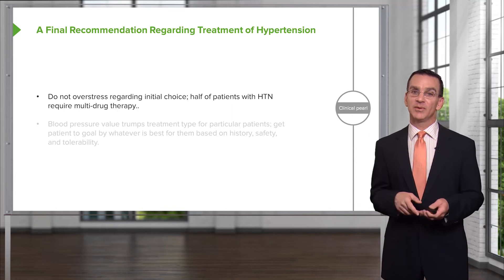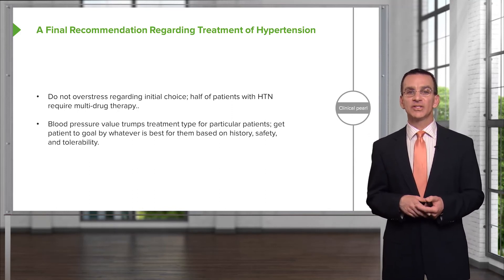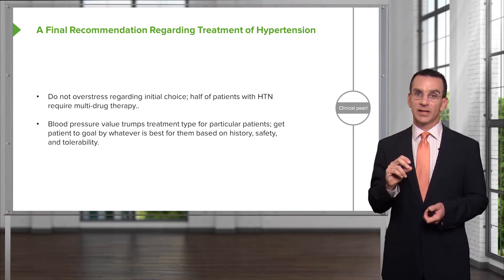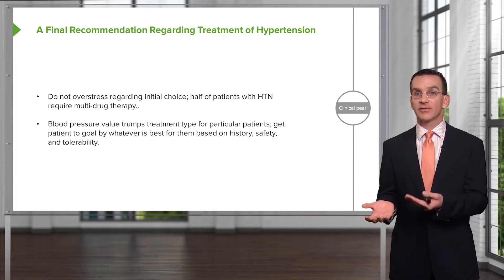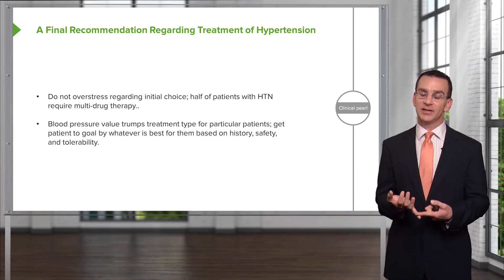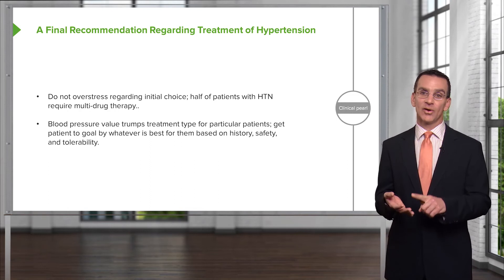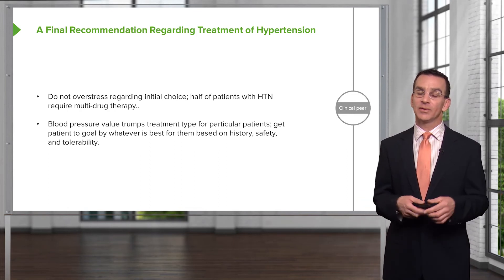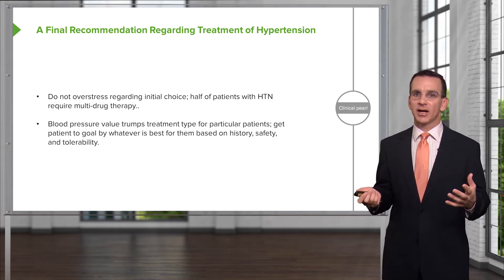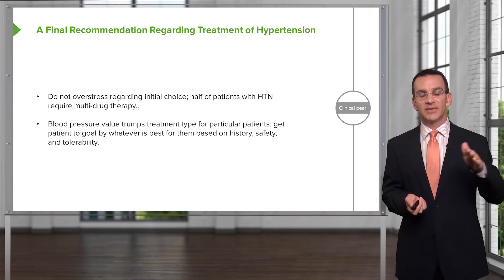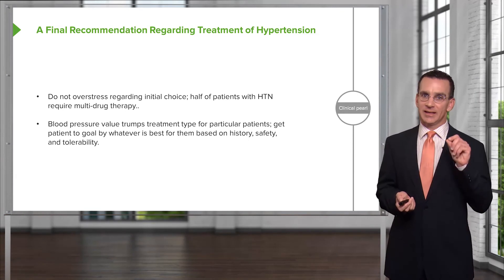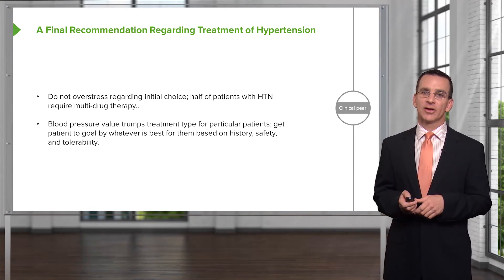If their blood pressure is still up, you might add a second agent. When choosing drugs, don't forget that really it's the number that is the most important thing. Say you have a patient with diabetes and nephropathy, but they really have a hard time taking any of those drugs — the non-dihydropyridine calcium channel blocker, ACE inhibitor, ARB — they can't tolerate any of them. But the only thing they can tolerate is an alpha antagonist or a beta blocker. It's not the ideal drug for that patient, but if it gets their blood pressure down towards goal, that's much more important than getting them on just the right drug for their chronic medical condition.